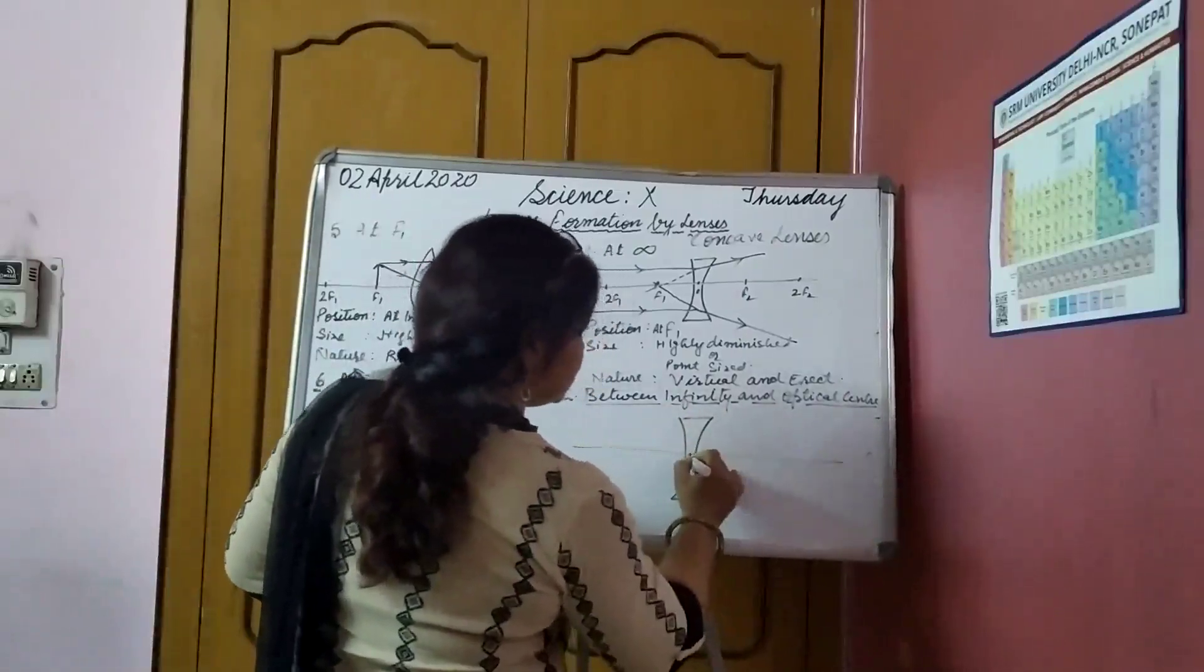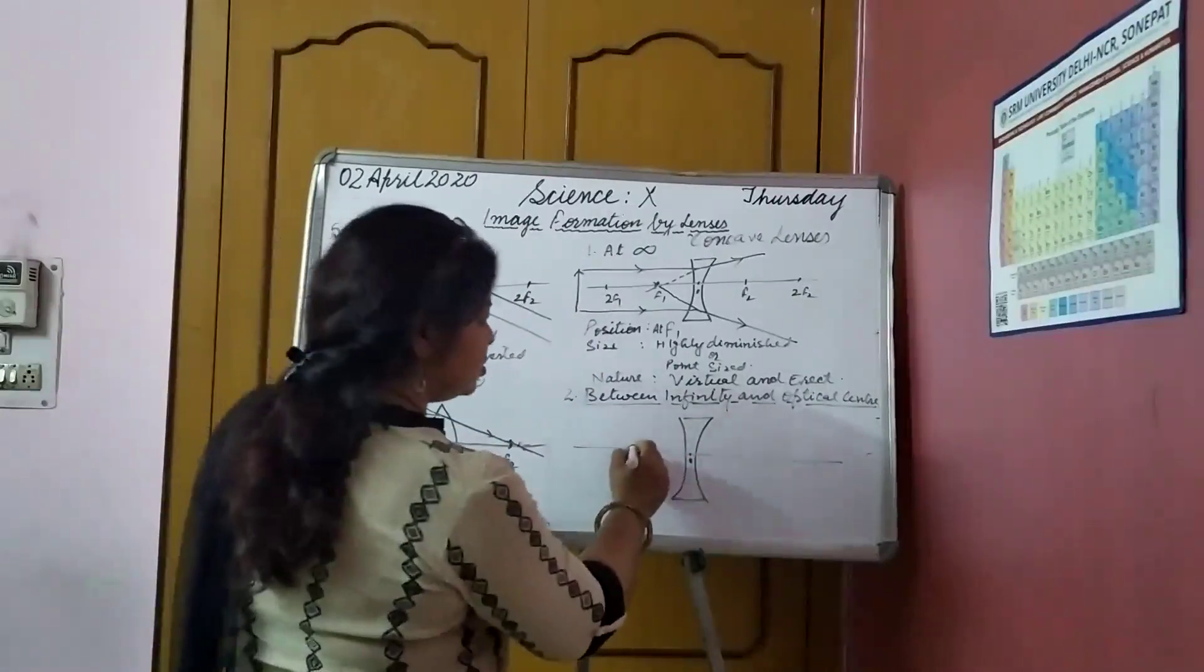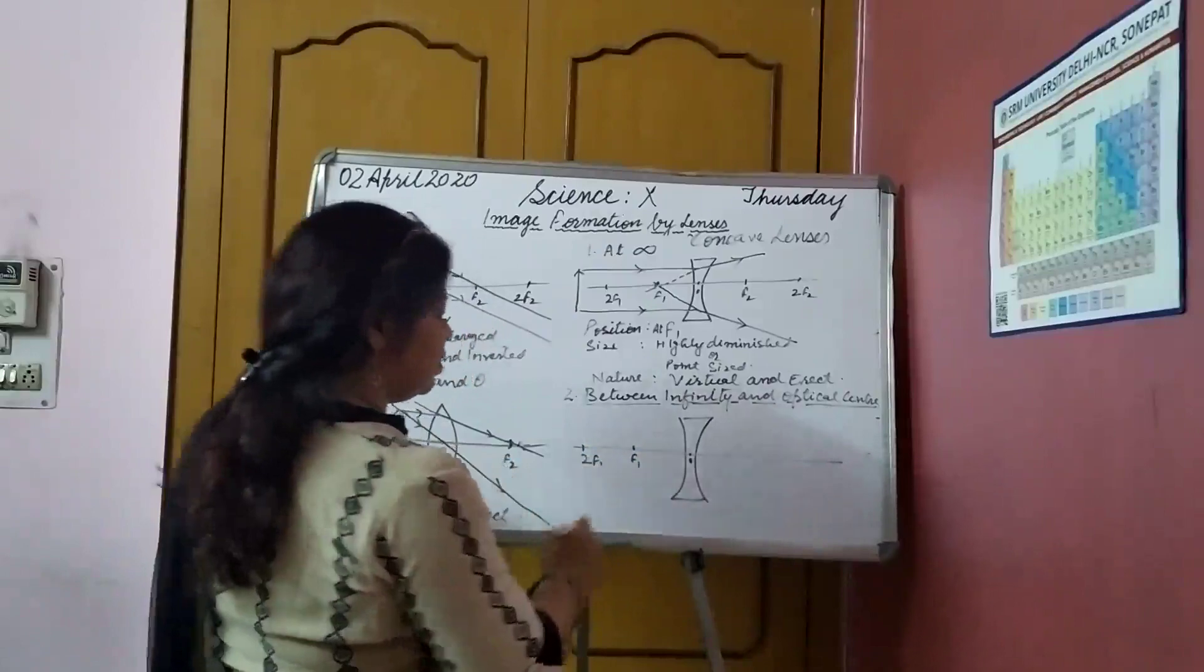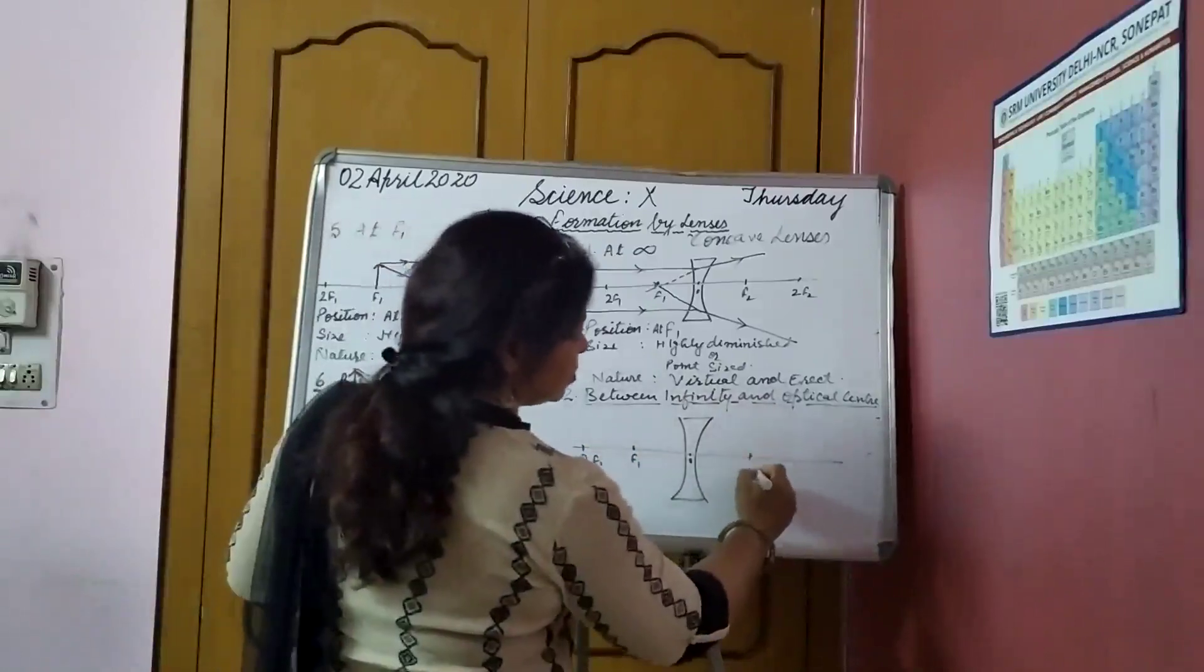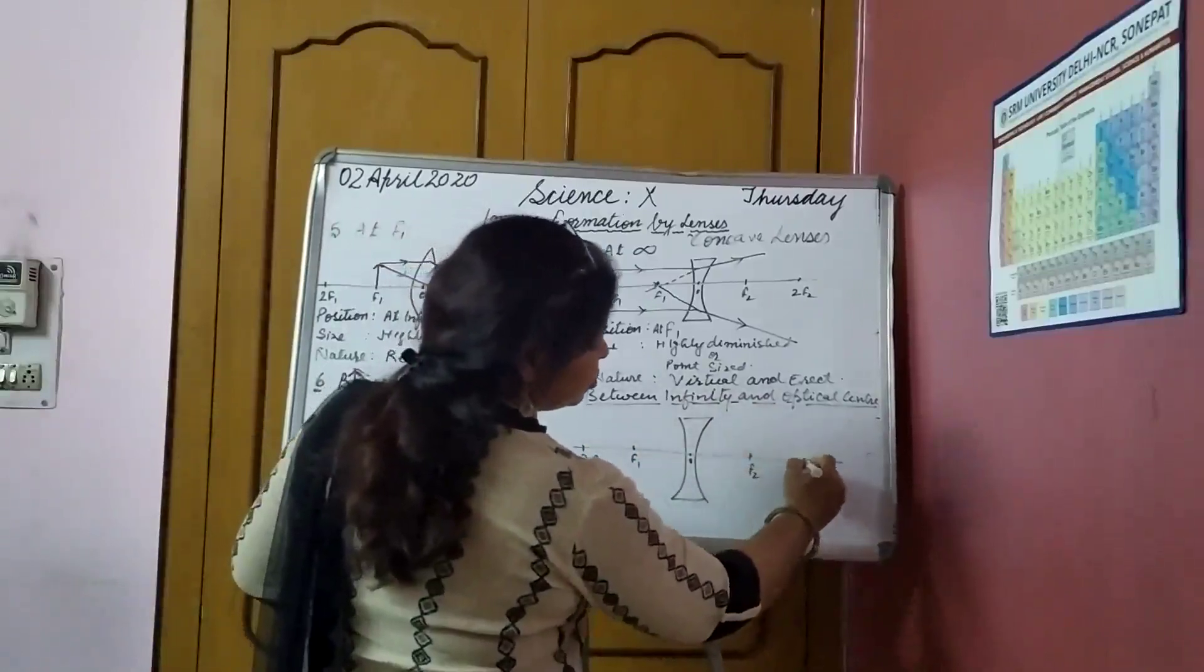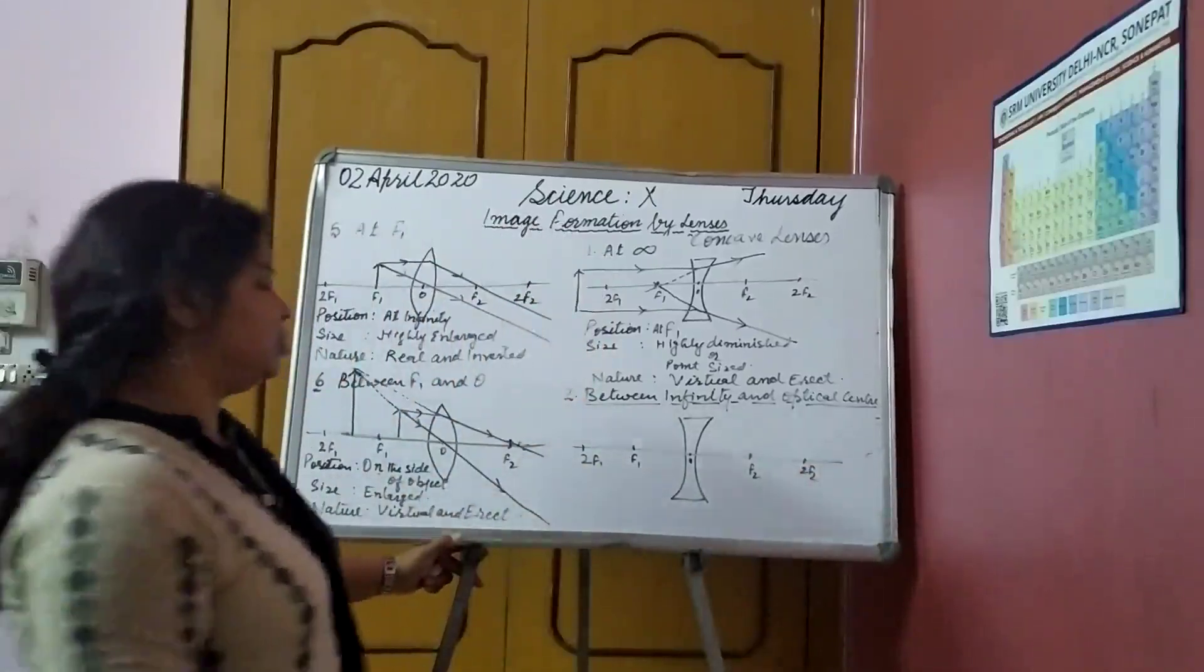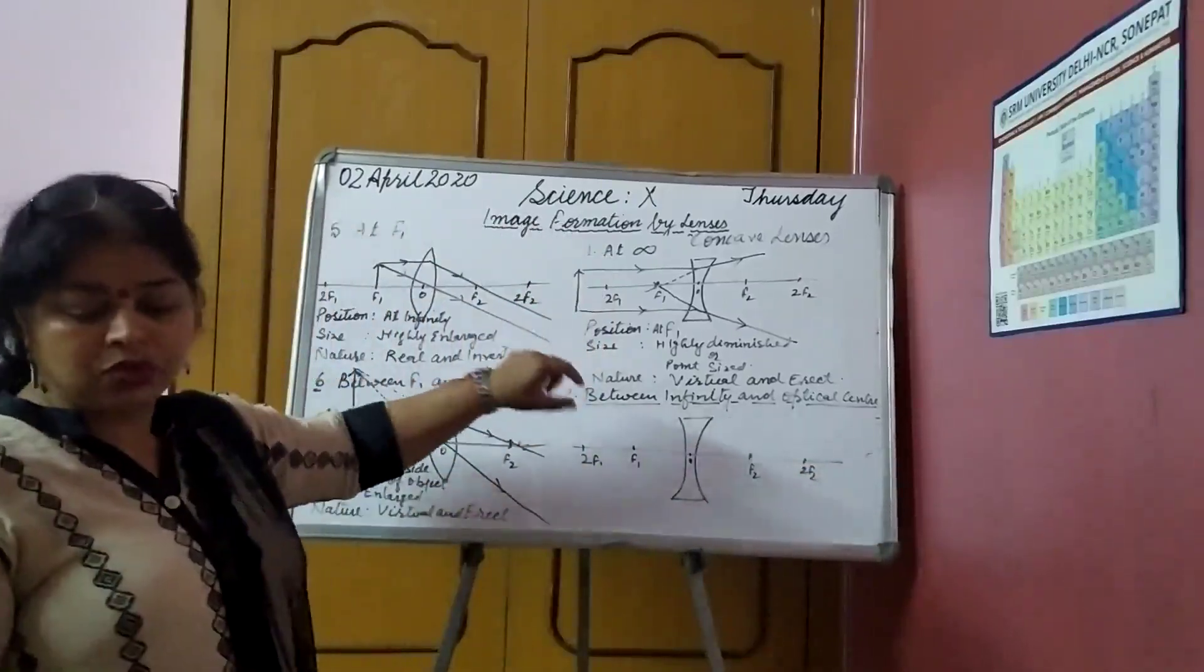This is concave lens. Principal axis, optical center. f1, 2f1, f2, and 2f2. So, what is going to happen here?